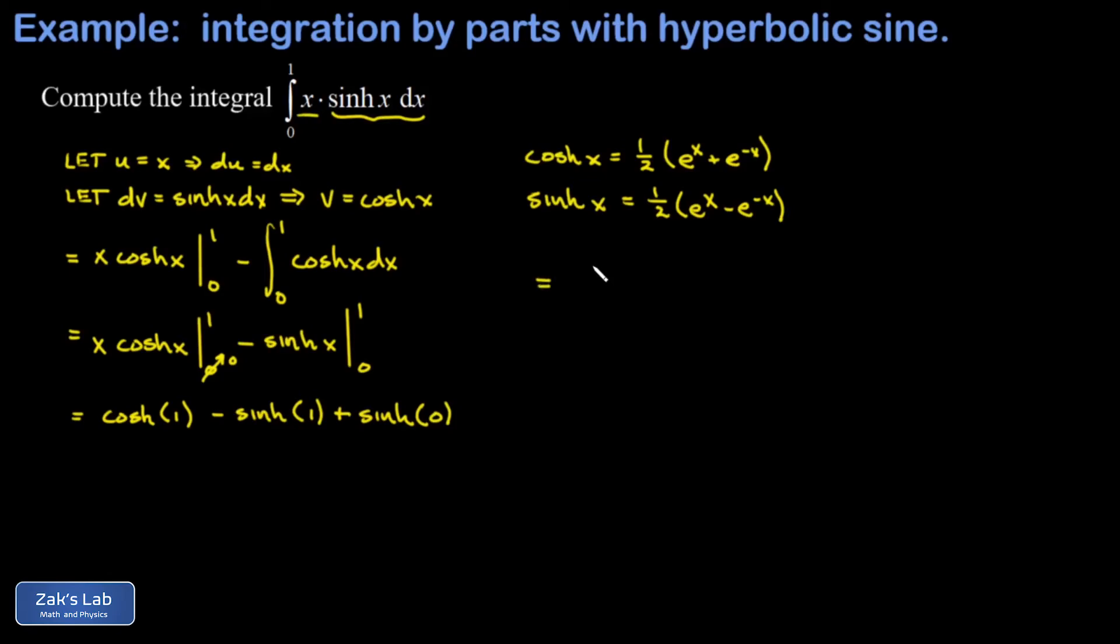And now I can evaluate what cosh of 1 is, so I can express everything in terms of e. So I imagine putting in x equals 1 into both of these exponents. And that gives me an e to the 1 plus e to the negative 1. In other words, I have a one half e plus 1 over e. Then I subtract the sinh of 1, giving me a one half e minus 1 over e for the sinh of 1. And then I have to add to this the sinh of 0.